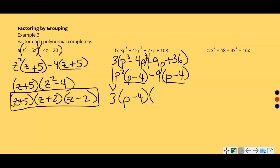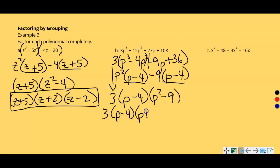We're left with 3(p − 4)(p² − 9). Again, p² and 9 are both perfect squares, so p² − 9 is a difference of squares — we're still not finished. Factoring gives 3(p − 4)(p + 3)(p − 3). This is the completely factored form.